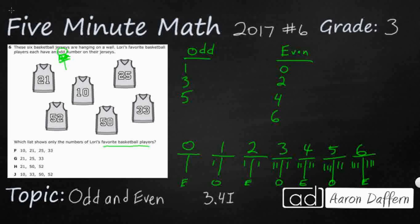We've got just a few more — we'll get the whole set here. 7 should be odd: 1, 2, 3, 4, 5, 6, 7 — it is odd. Let's do 8 and 9, and then I'll show you why we can stop. 1, 2, 3, 4, 5, 6, 7, 8 — 8 is even.